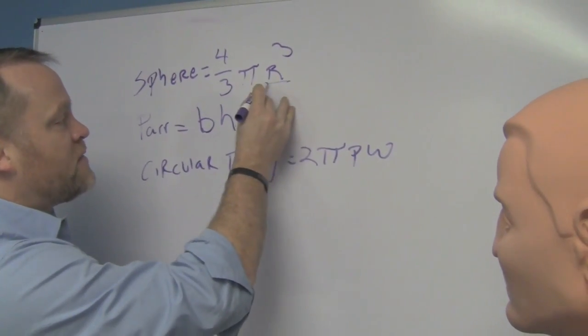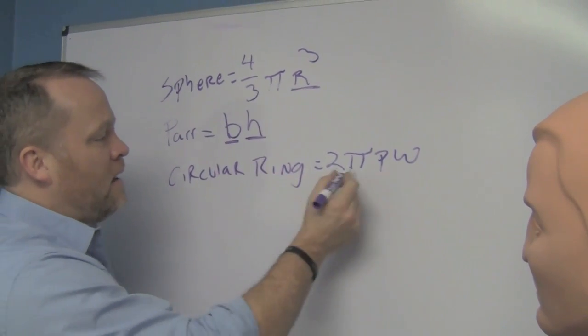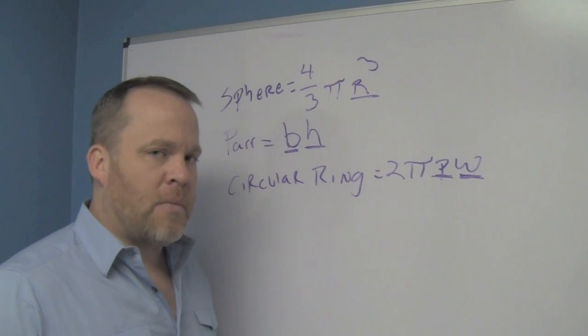Here, R stands for radius. It's unknown. B stands for base. H stands for height. P stands for perimeter. W stands for width. These are the variables. These are unknown numbers.